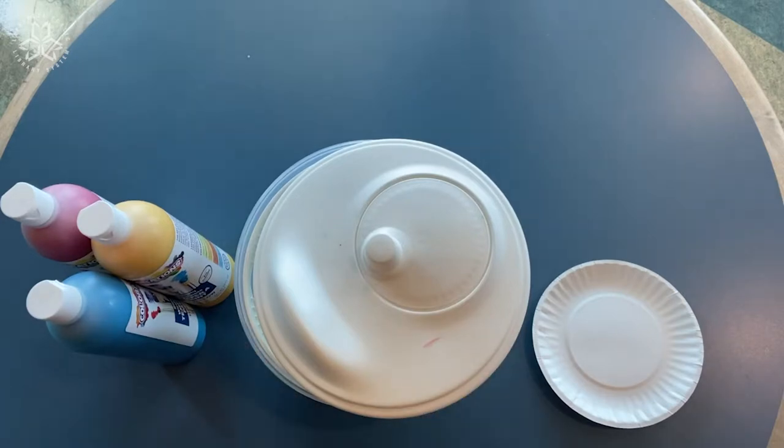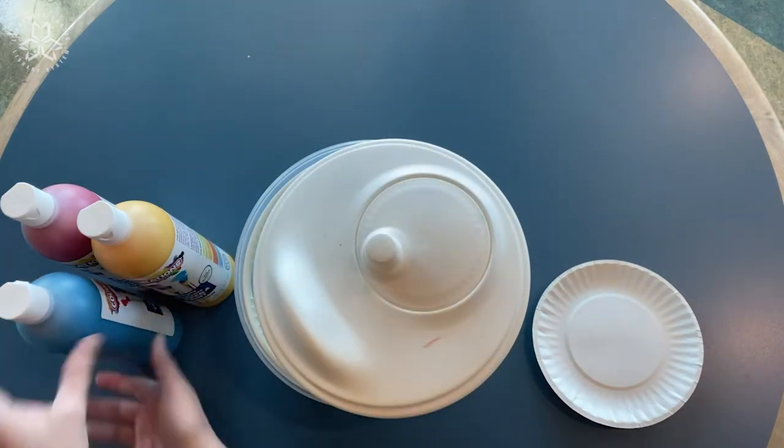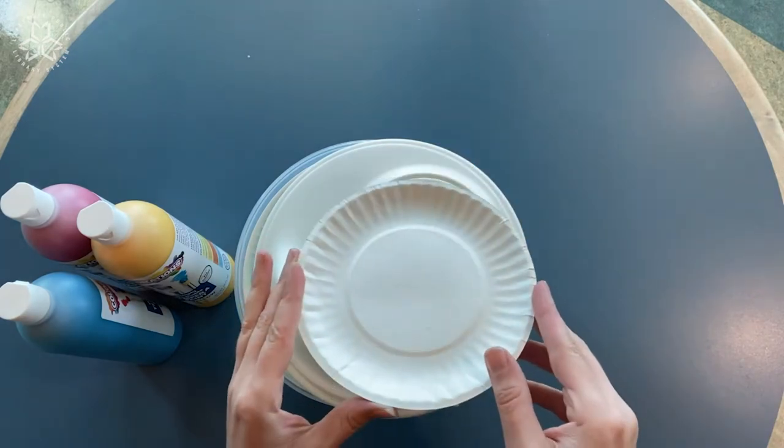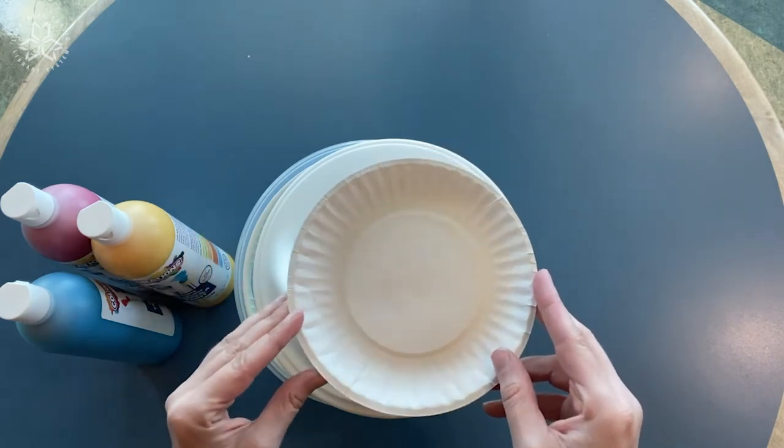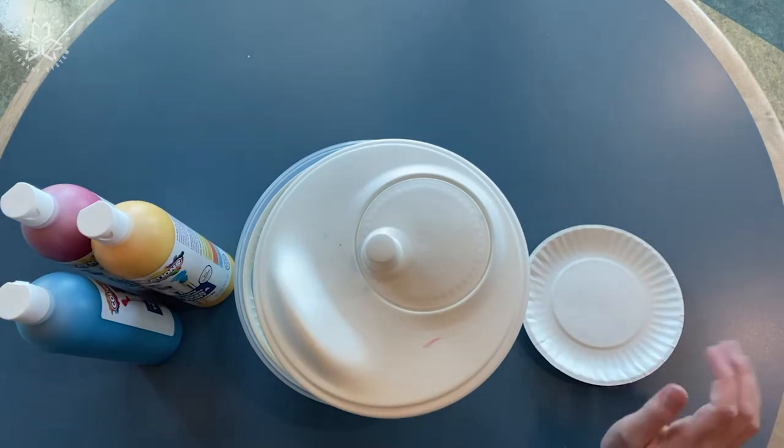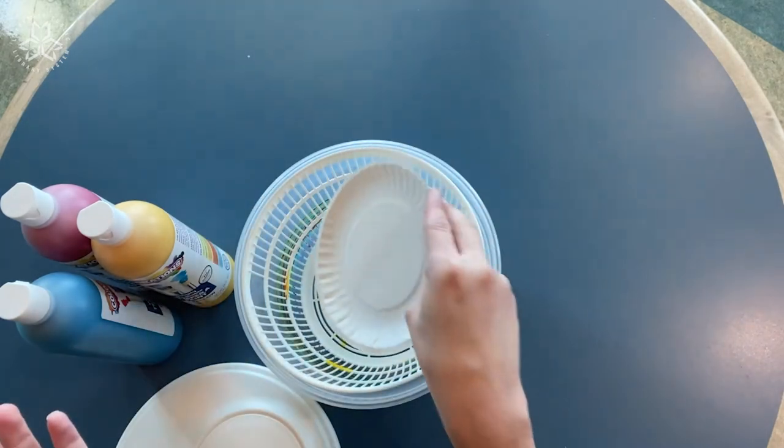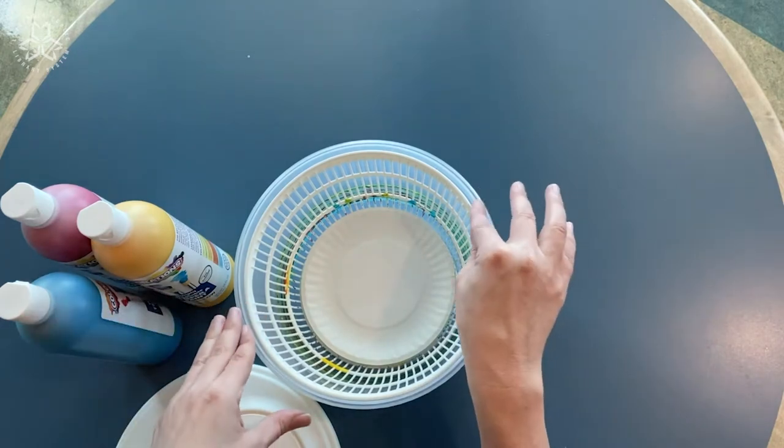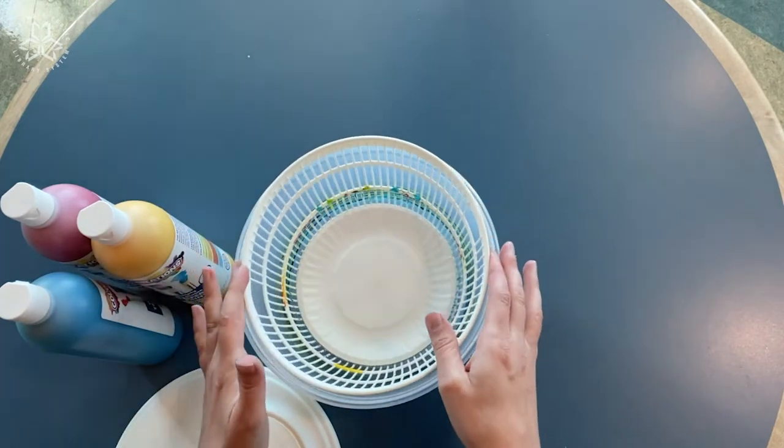Alright, for this project you're going to need a salad spinner. You'll also need some paint in the colors of your choosing. I'm using washable tempera paint. You'll also need either a paper plate or some cardstock or maybe a piece of construction paper. I definitely wouldn't recommend copy paper because it's too lightweight and would just flop around and fold over on itself, so you'll want something a little sturdier. The small paper plate just happens to fit perfectly in my salad spinner, but you could also trace the bottom of the basket onto a piece of paper, cut that out, and toss that into the basket.